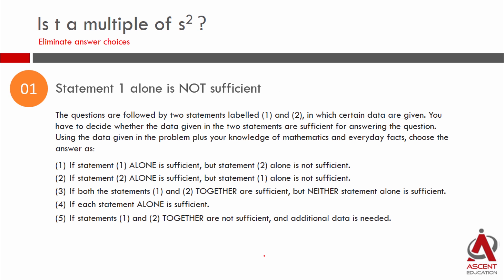If one is not sufficient, what do we do? Quick, some answer choices can be eliminated. Answer choice one, eliminate. Answer choice four, eliminate. So what are we down to? Three answer choices: 2, 3, 5.